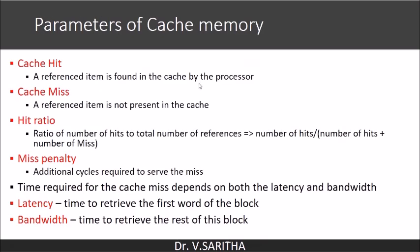Some key parameters of cache memory are: cache hit, cache miss, hit ratio, miss penalty, latency, and bandwidth. A cache hit occurs when a referenced item is found in the cache by the processor. The processor itself does not know whether it is searching cache or main memory — the address is put on the address bus, cache memory is searched first, and if found, the data is put onto the data bus by the cache memory.